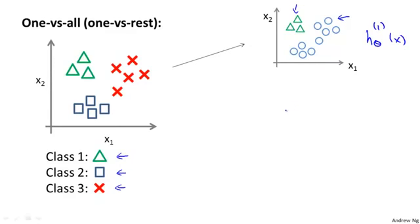And we're just going to train a standard logistic regression classifier, and maybe that will give us a decision boundary that looks like that. The superscript 1 here stands for class 1, so we're doing this for the triangles of the first class.